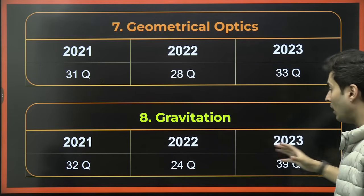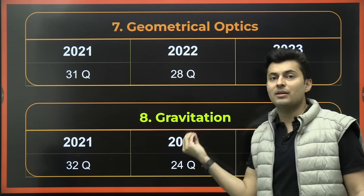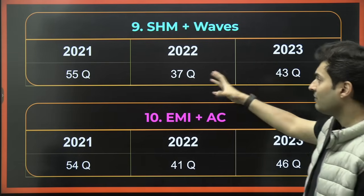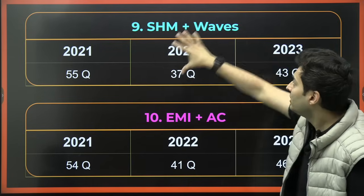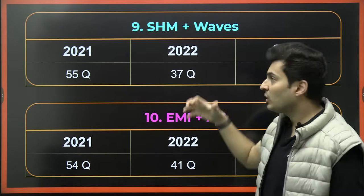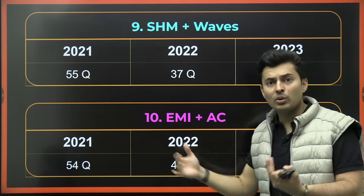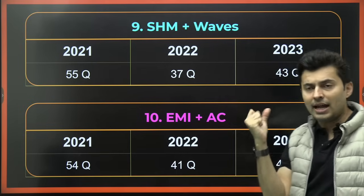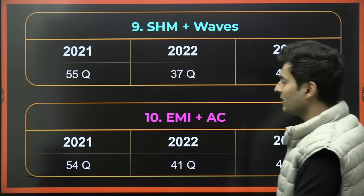Geometrical optics has above-average weightage. Interestingly, gravitation alone has equal weightage to geometrical optics, but gravitation can be completed in about one day while ray optics takes many days. SHM and waves as a complete unit are very heavy. EMI and AC are also very heavy — and all these are related because they involve phasors, vector addition, superposition, and sine/cosine terms. In many coachings, all these topics are taught together as one unit.